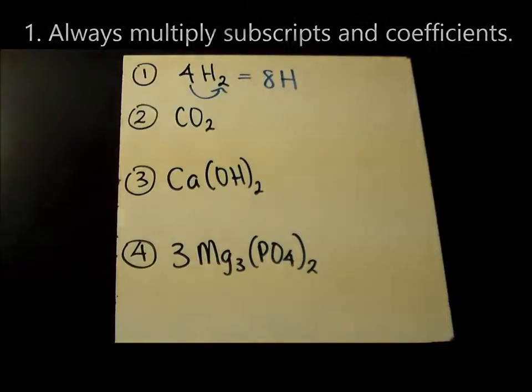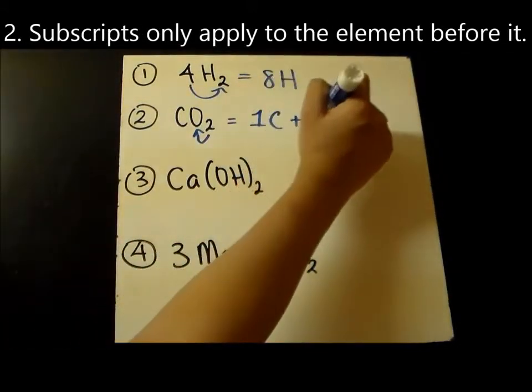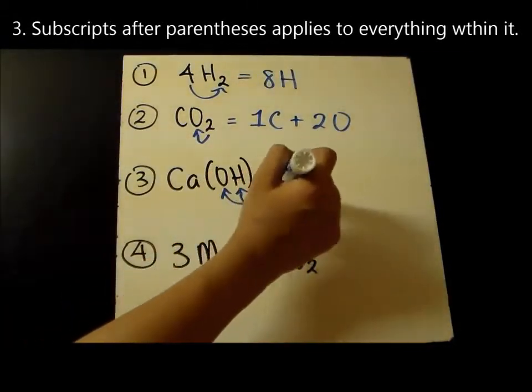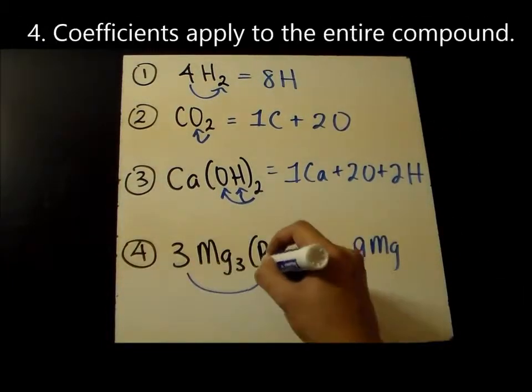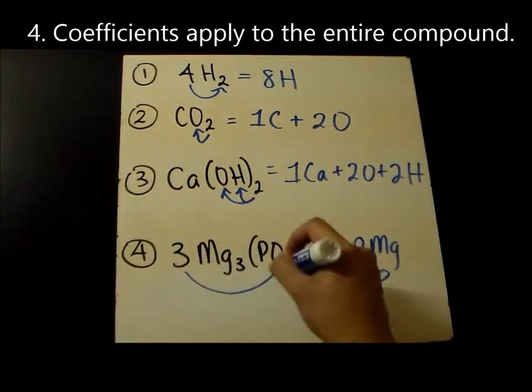You always multiply subscripts and coefficients. A subscripted number only applies to the element right before it. A subscripted number written after parentheses applies to everything inside the parentheses that precedes it. A coefficient applies to the entire compound written after it.